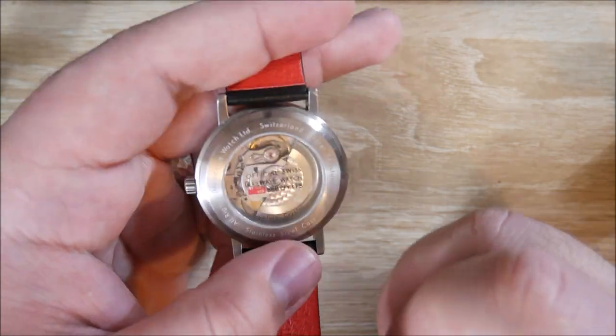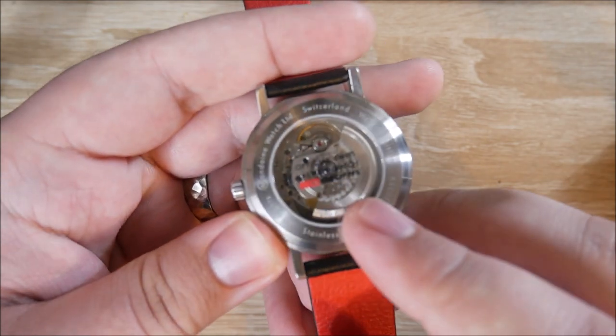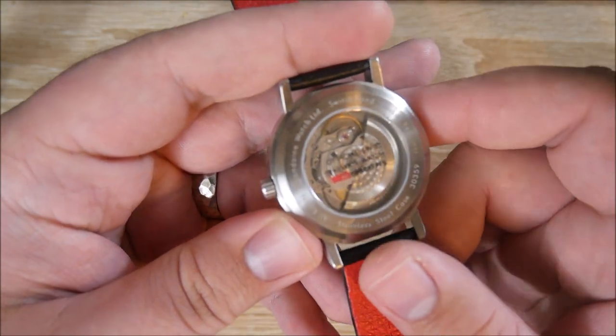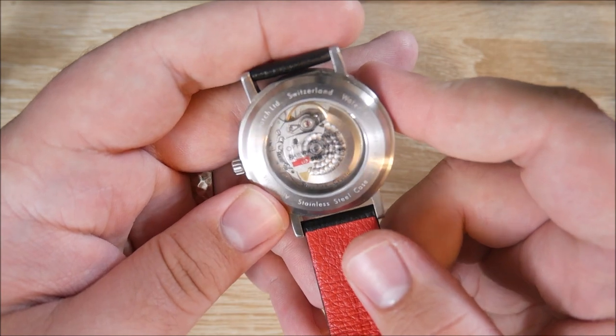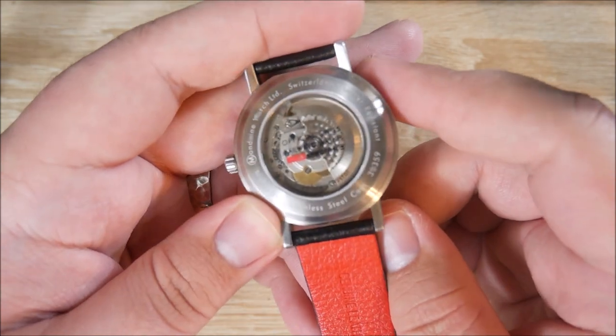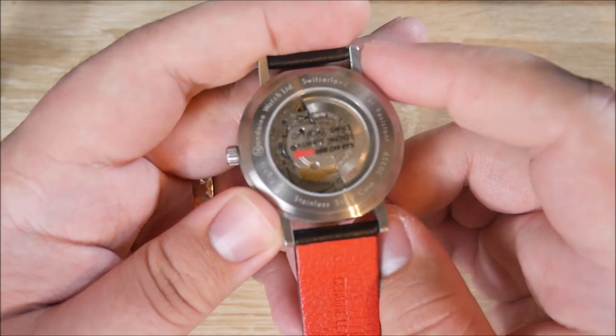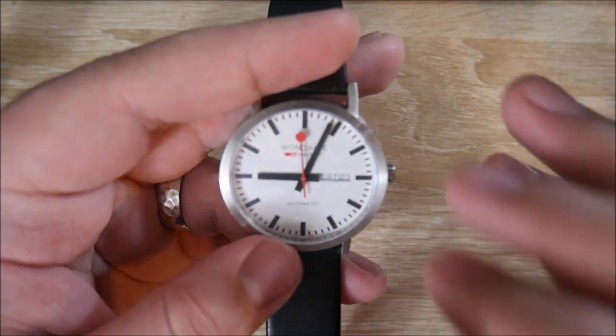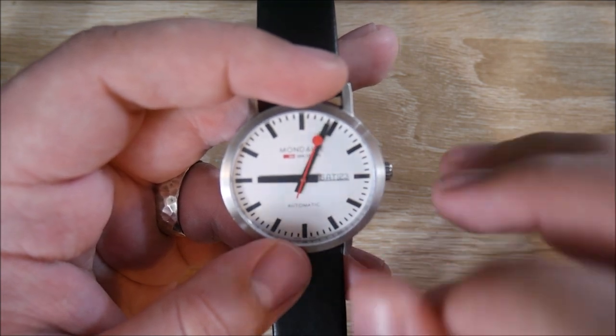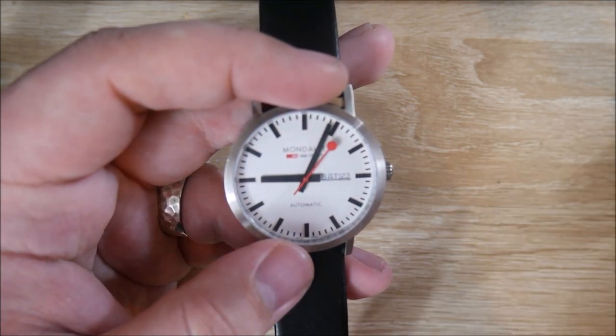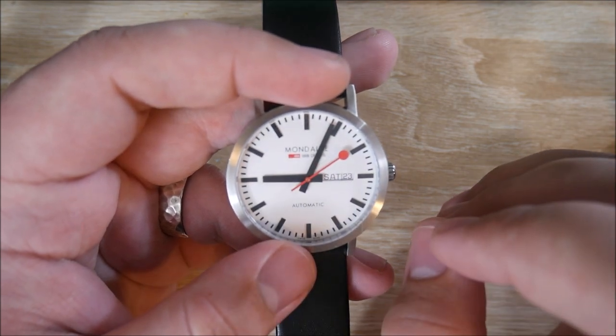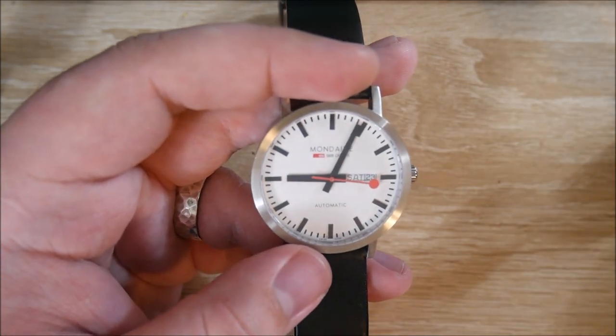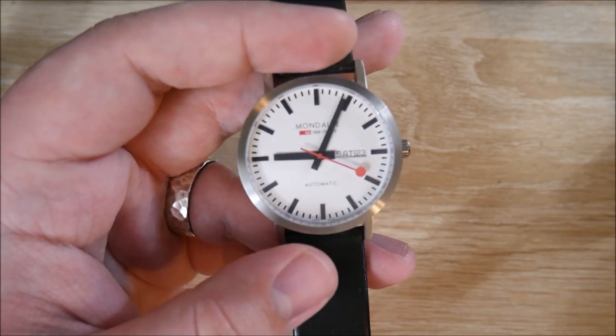As far as the back side, you can see there's a little bit of perlage on the rotor wheel. This movement is the Selita SW-220, a 26-jewel, 38-hour power reserve, hacking and hand-winding movement. It's a Swiss movement with the day-date complication. It's pretty good so far. I'm running about three seconds fast per day on average over the course of about 11 months. This was also the watch that I wore on my trip to Europe every single day without any real problems.